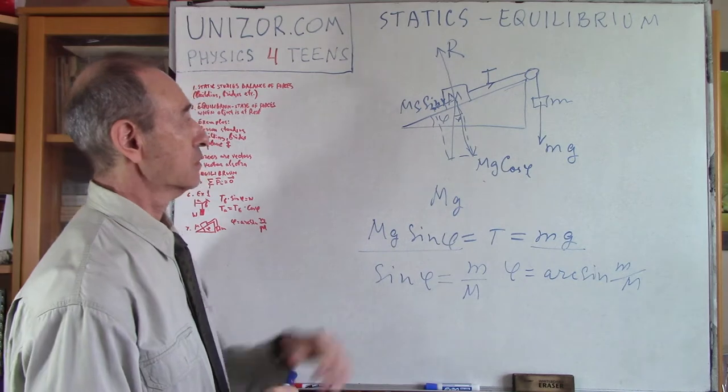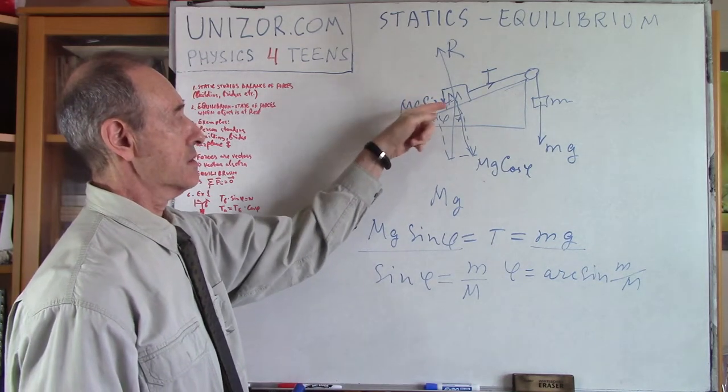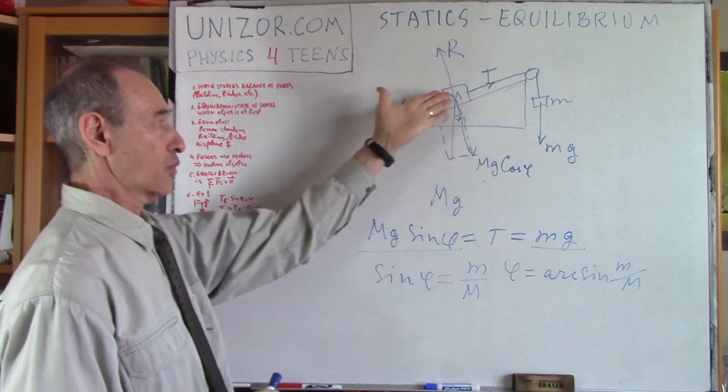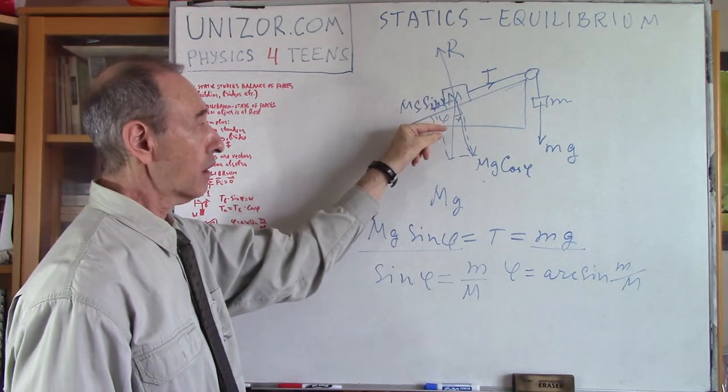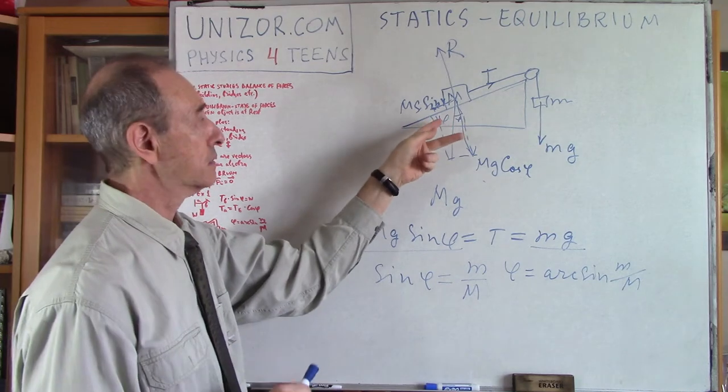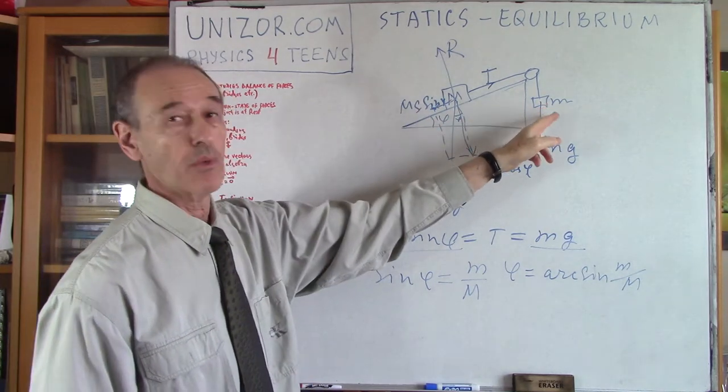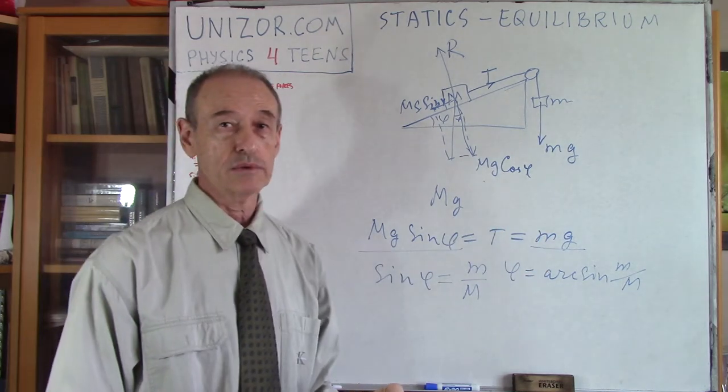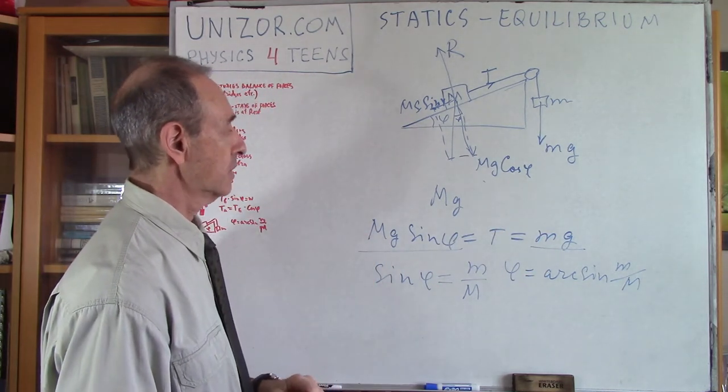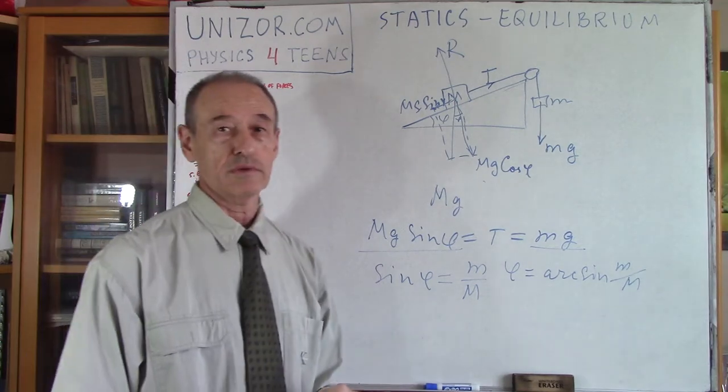If this angle will be greater then the the bigger mass would just pull to the left. If the angle is smaller, there is no friction right, now this smaller mass would go down and if we are in equilibrium this is the condition of equilibrium.